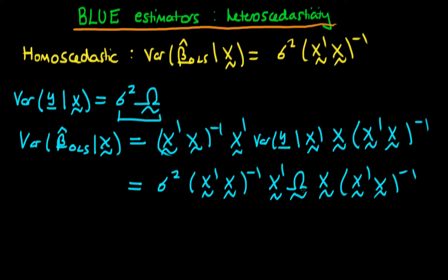I can't make any further simplifications to this expression because omega doesn't have any particularly nice relationships with x. For example, if it were the identity matrix it would just leave x as it is. So this is actually the form of the variance of OLS estimators in the presence of heteroscedasticity.